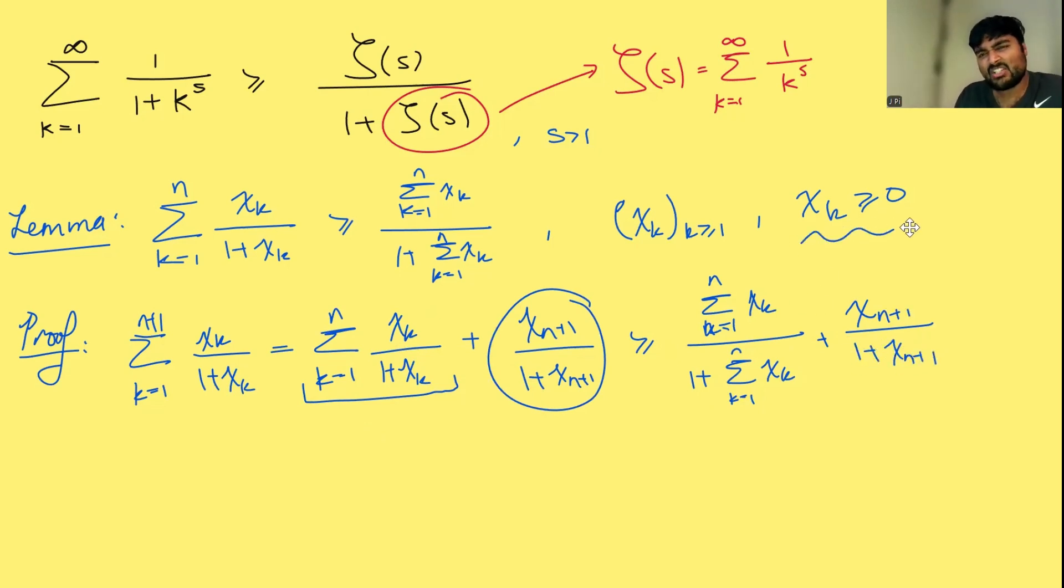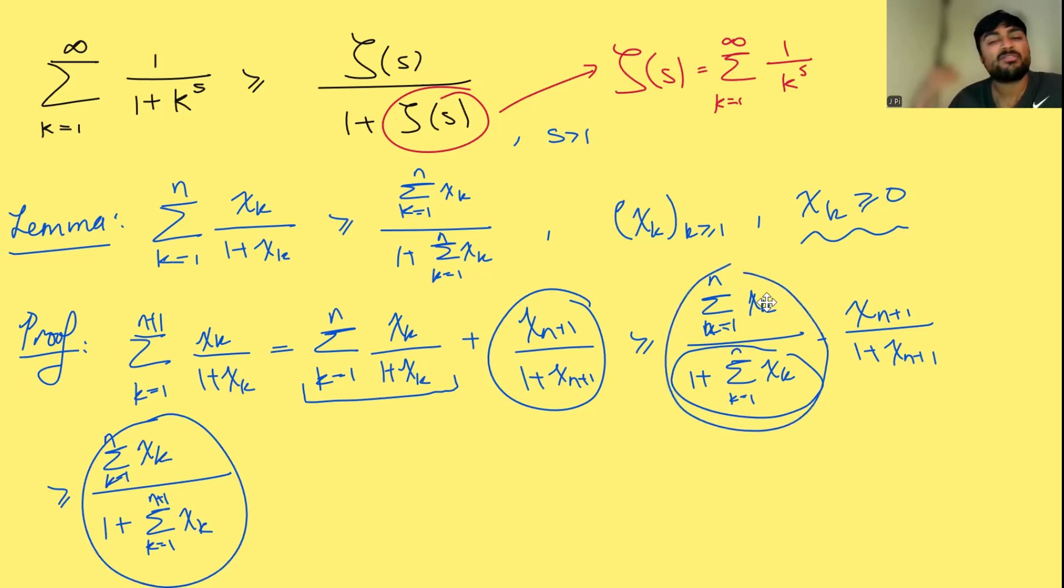And now we're going to use the fact that each of these guys are non-negative. We can clearly see that this denominator here is smaller than if I put 1 plus the sum from k equals 1 to n plus 1 of xk. In other words, I just added another term onto the bottom. And since everything is non-negative, that's only going to make the denominator bigger. And so that's going to cause the whole thing to become smaller. So this guy here is bigger than or equal to this guy here. So this guy is basically the same as this guy, but I've just made the denominator bigger, hence the quantity is smaller.